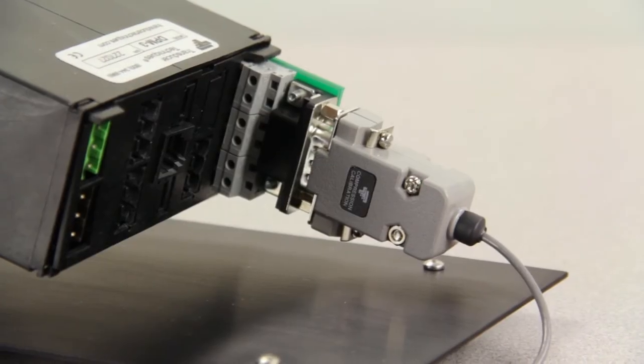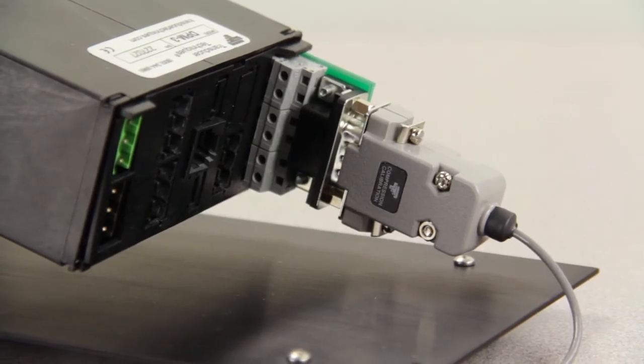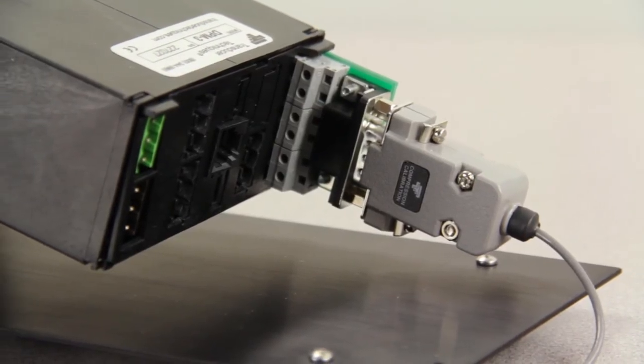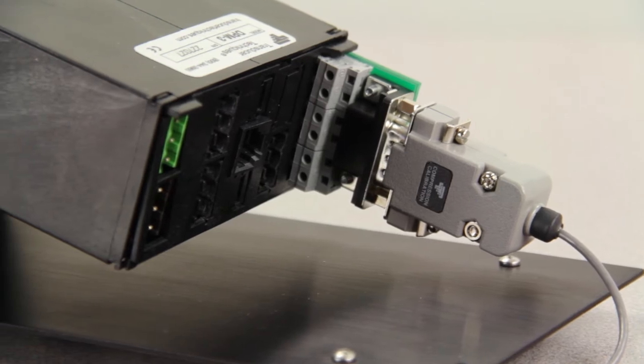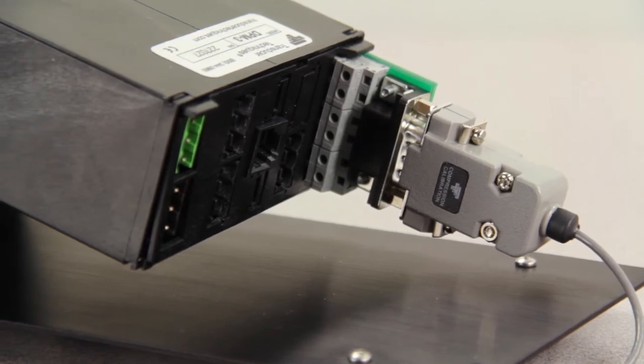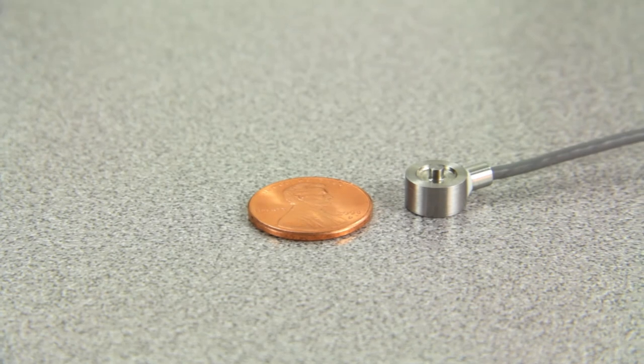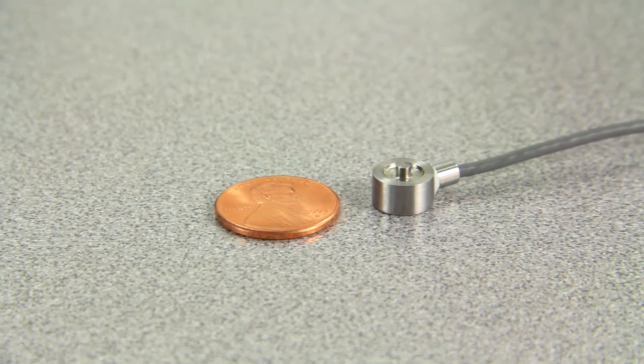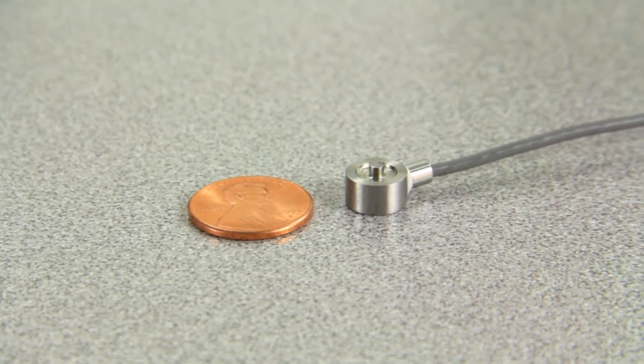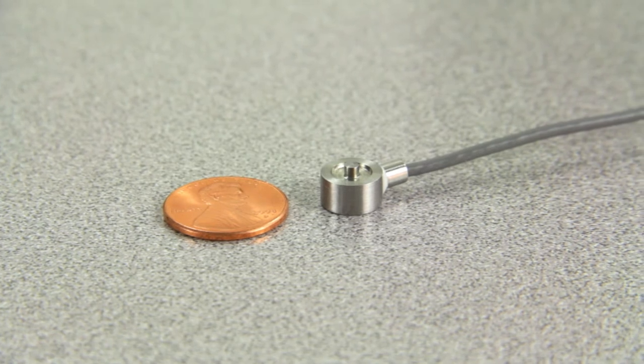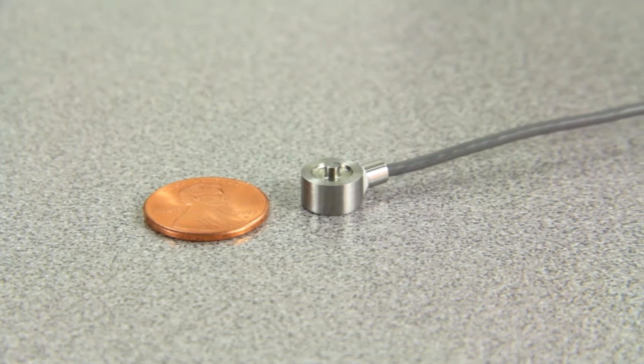Then it automatically adjusts the meter's excitation voltage for the sensor's appropriate value. This is to prevent an over-voltage. This is extremely important due to many miniature load cells have a maximum excitation of 5 volts, and most instruments supply 10 volts. The plug-and-play feature assures you won't over-voltage and damage your sensor.